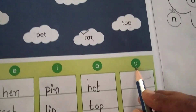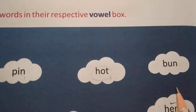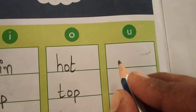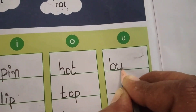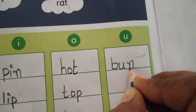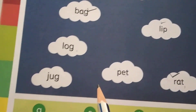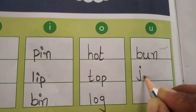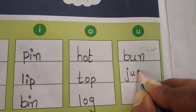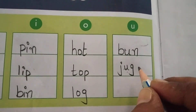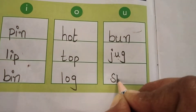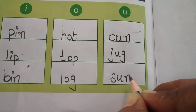Now U words — U should be there in that word. Here: B, U, N — bun. U is there. Write B, U, N — bun. One more word: jug — J, U, G — jug. U is there. J, U, G — jug. See: S, U, N — sun. U is there. S, U, N — sun.